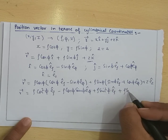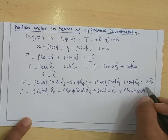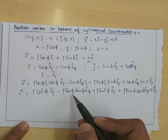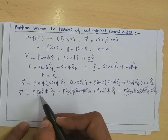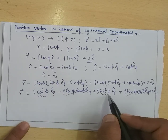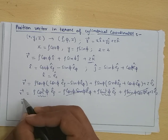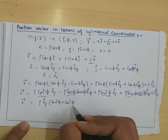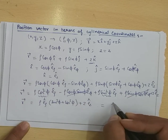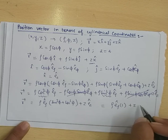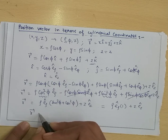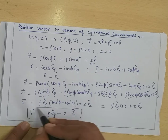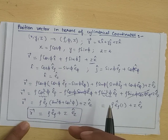The E_phi terms cancel: minus Rho·cos(Phi)·sin(Phi) plus Rho·sin(Phi)·cos(Phi) = 0. Taking Rho·E_rho-cap common, we get sin²(Phi) plus cos²(Phi) = 1. So the position vector simplifies to: R = Rho·E_rho-cap plus Z·E_z-cap. This is the position vector in cylindrical coordinates.